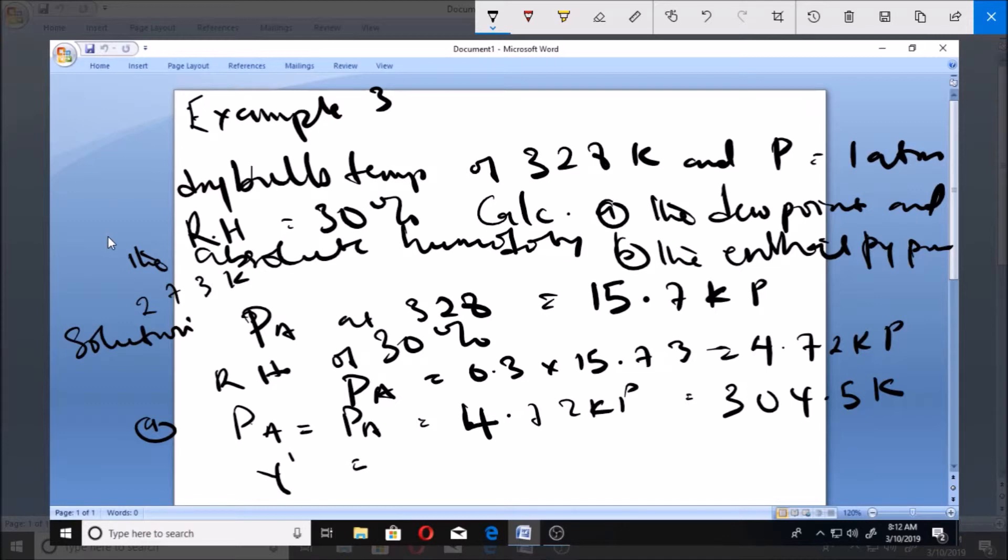The second part is to calculate Y, which is the absolute humidity. We have 4.72 over (101.3 minus 4.72) times the molecular mass 18 over 29, which gives us 0.03 kilogram of H2O per kilogram of air. So the dew point is 304.5 and the humidity is 0.03.